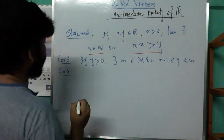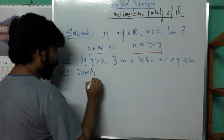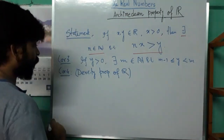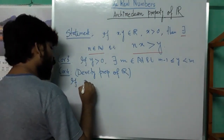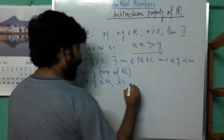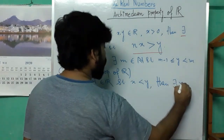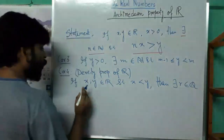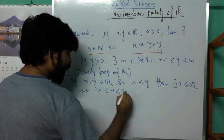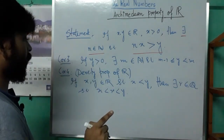Next application of the Archimedean property is the very important density property of reals: if x and y are two real numbers such that x < y, then there exists a rational number in between x and y. In other words, between every two real numbers there is at least one rational number.